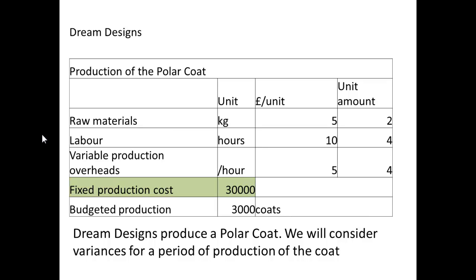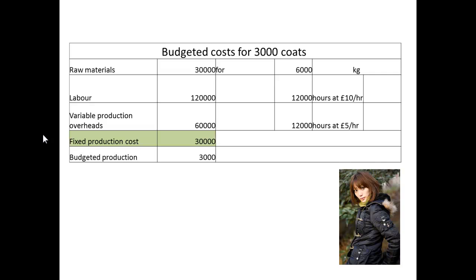Our example is Dream Designs producing polar coats. We need to note here from the details for production that the fixed production cost — the fixed overhead — is expected to be £30,000 for 3,000 coats. So the budgeted costs for our 3,000 coats is £30,000.